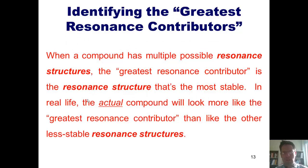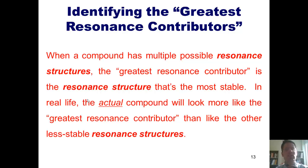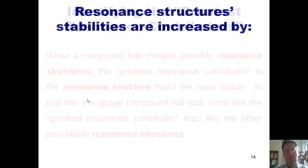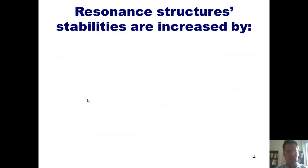We now move on to another subject: identifying the greatest resonance contributors. As it turns out, when a compound has multiple possible resonance structures that are all legitimate, the greatest resonance contributor is the resonance structure that's the most stable. In real life, the actual compound will look more like the resonance structure that's the greatest resonance contributor. So that begs the question, how do you determine which of multiple resonance structures is the most stable?